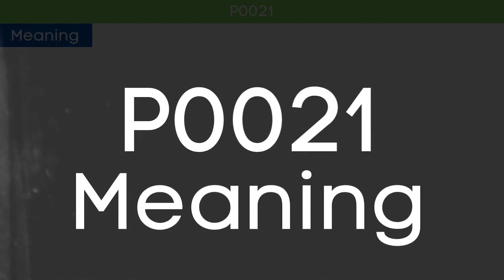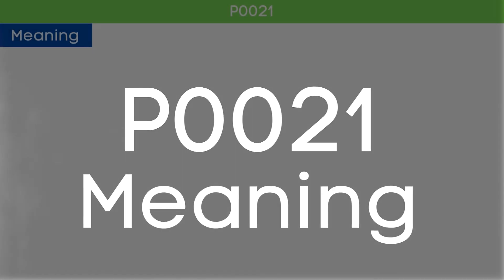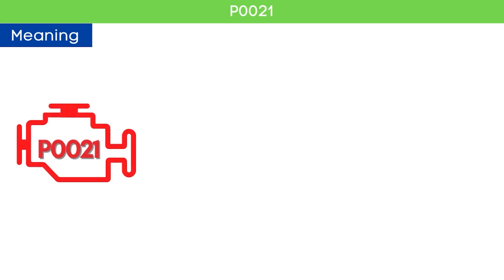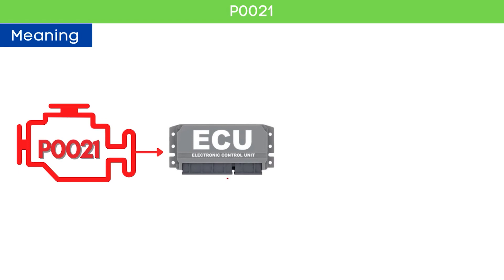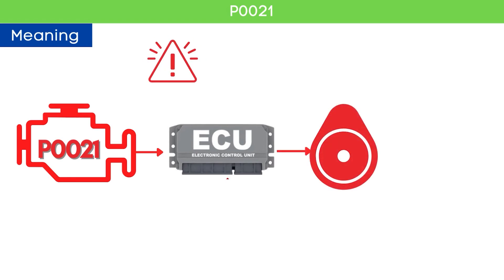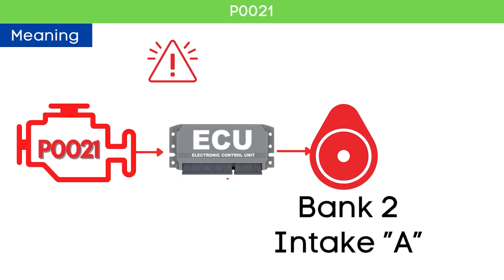The P0021 code indicates that the ECM has detected that the camshaft timing for Bank 2, specifically the intake camshaft, is over-advanced.